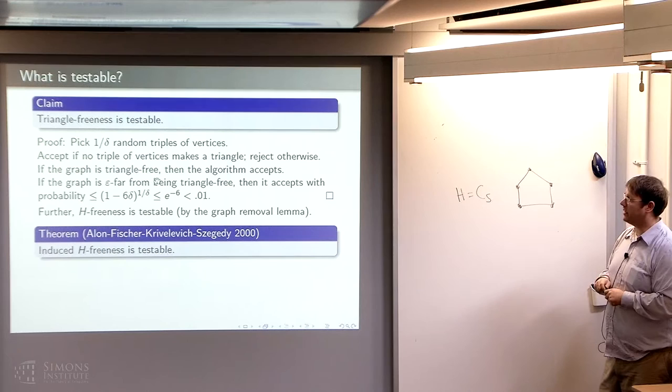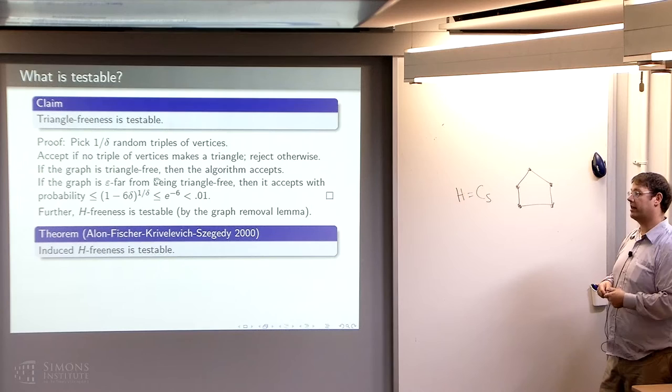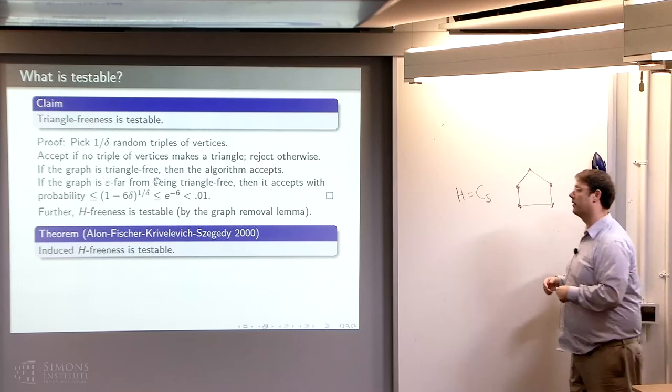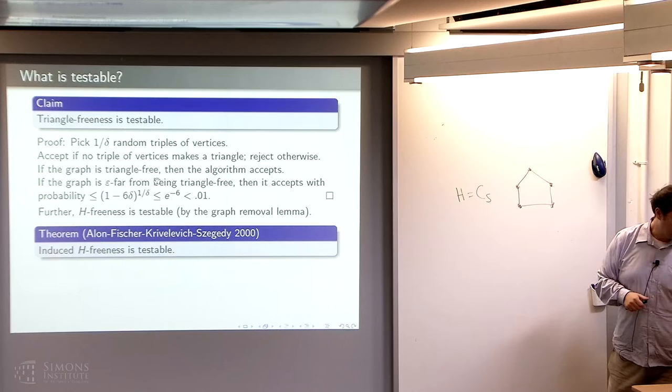What they ended up developing is something called a strong regularity lemma, proved by iterating Szemerédi's regularity lemma. Instead of getting tower-type bounds, you end up getting Wowser-type bounds, which is next up in the Ackermann hierarchy. Using the strong regularity lemma, you can get an induced graph removal lemma and show that induced H-freeness is testable.